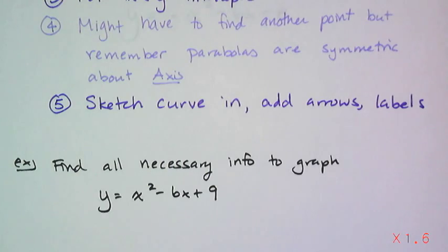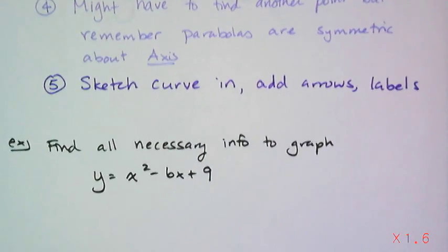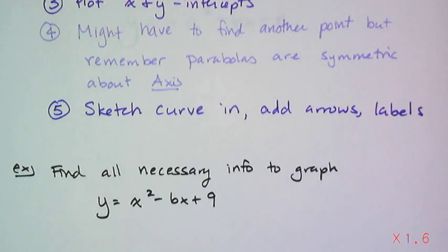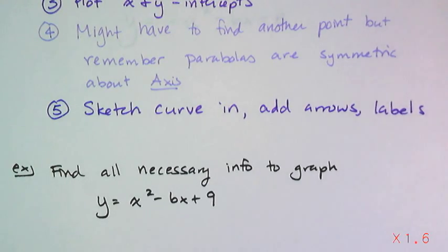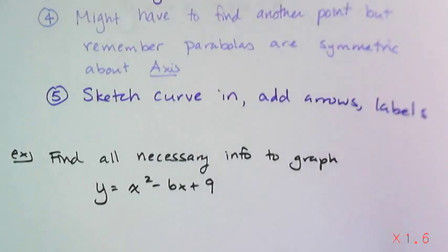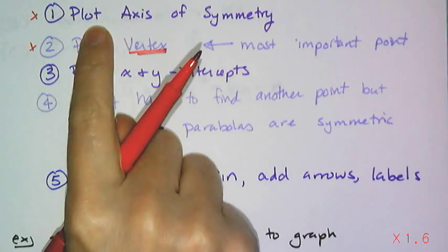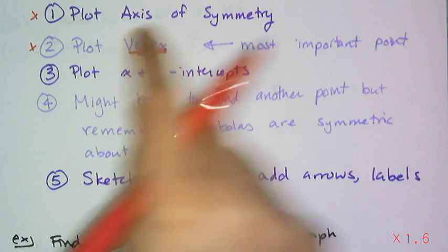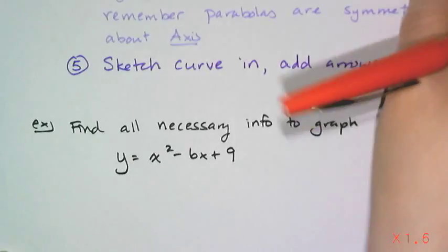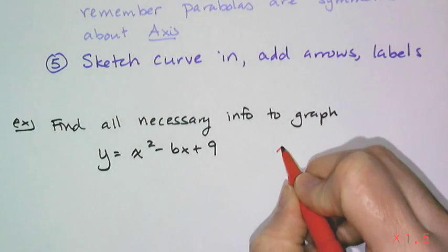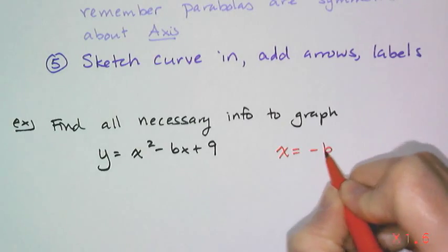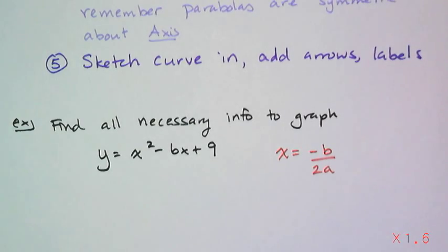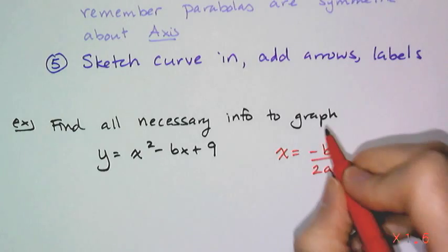Now the hardest part of graphing a parabola or quadratic function by hand is finding all the necessary information to actually graph it from the equation. And so let's do an example where I find all the information I need to graph. The first thing I need to know is where that axis of symmetry is, which is where that formula comes in handy. I need x equals the opposite of b over 2a. That's how I find my axis of symmetry.